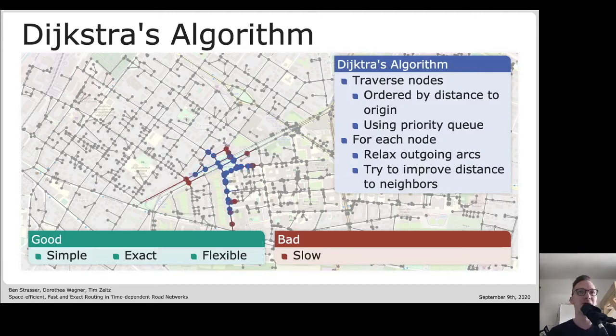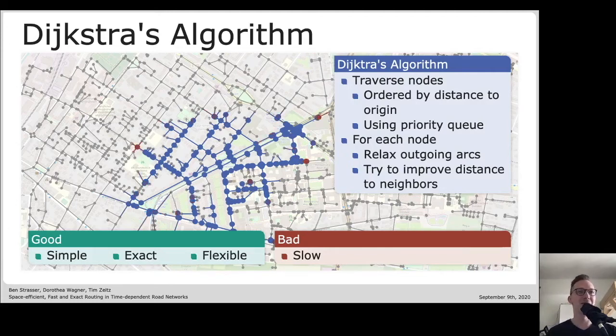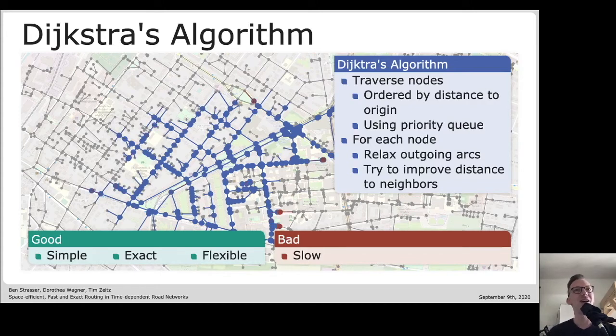This is still a very classical problem and it can be solved with a very classical algorithm like the algorithm of Dijkstra. Which finds shortest paths by starting with the start node and then exploring the nodes of the graph with increasing distance. So there is this growing ball around the start node. Once Dijkstra's algorithm finds the target node it knows the final distance. This algorithm has been around for a long time, it's very simple to implement, it is guaranteed to always find the exact shortest path, and it's quite flexible.